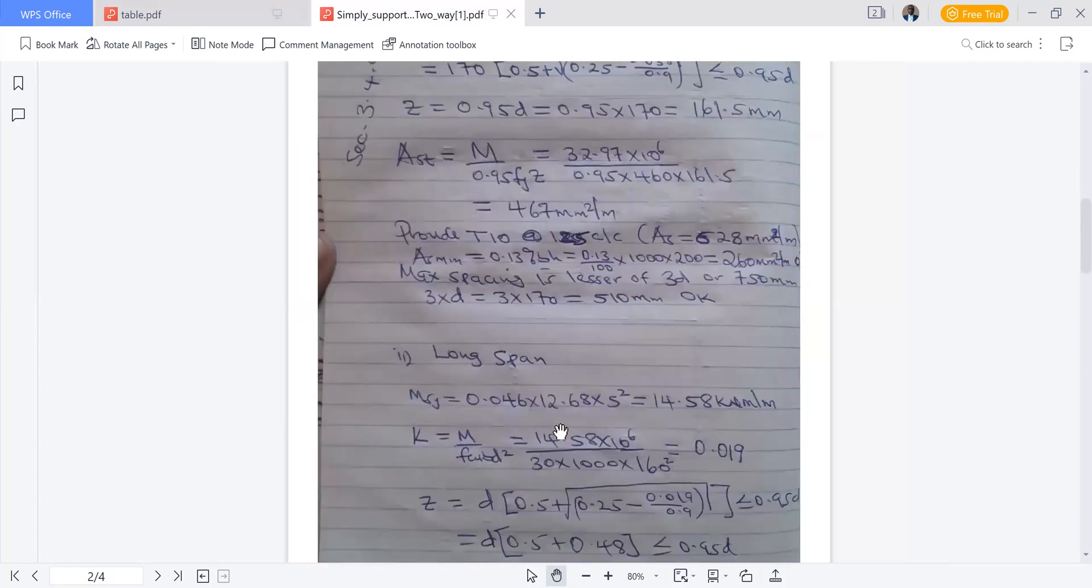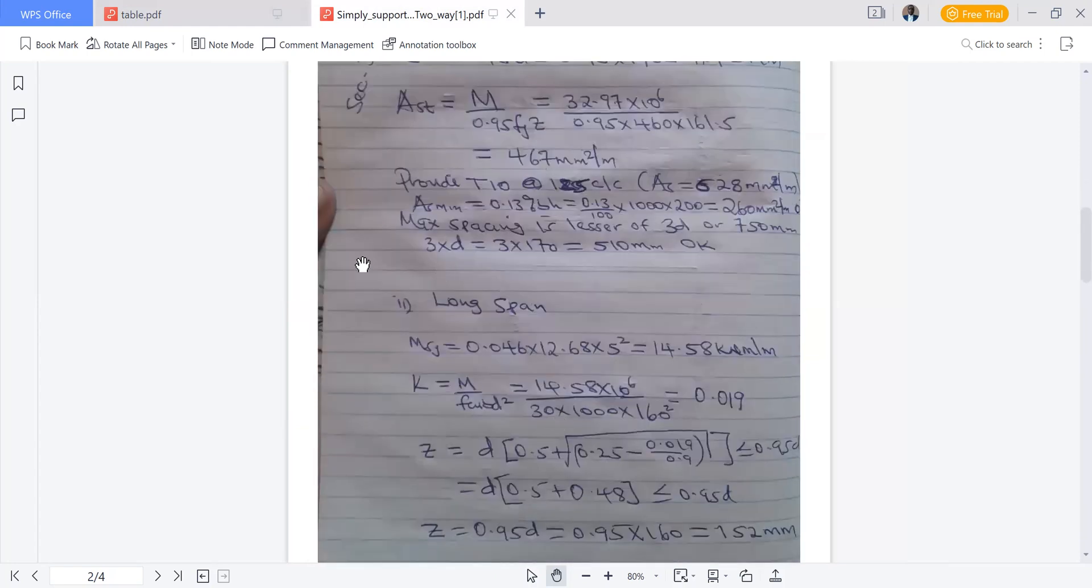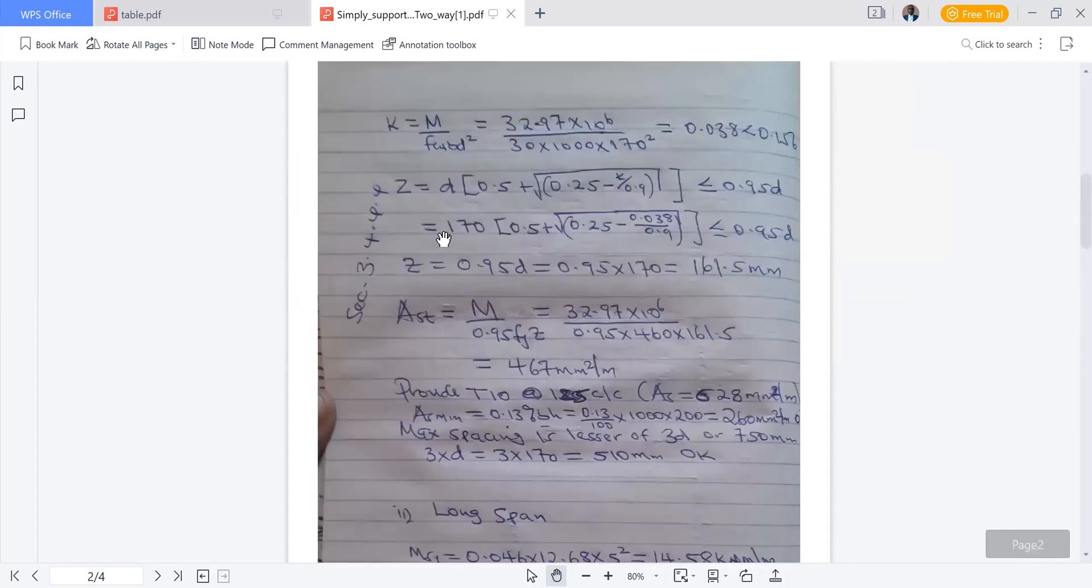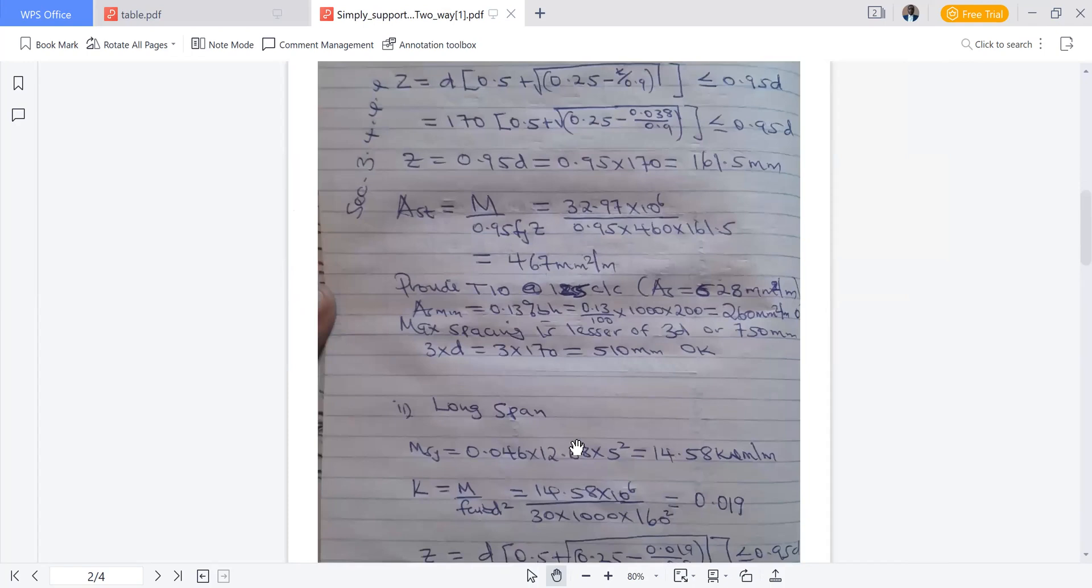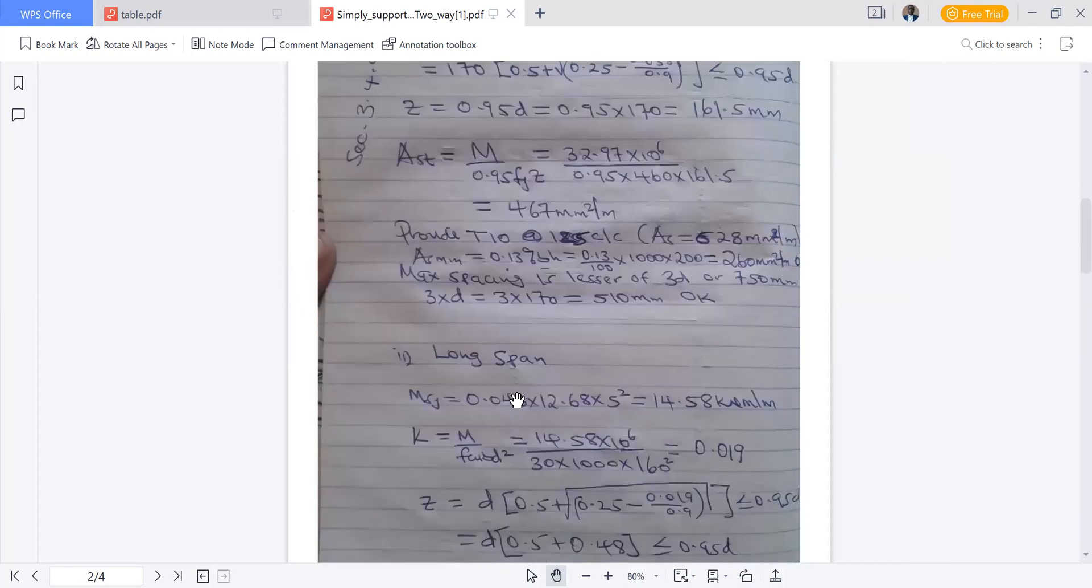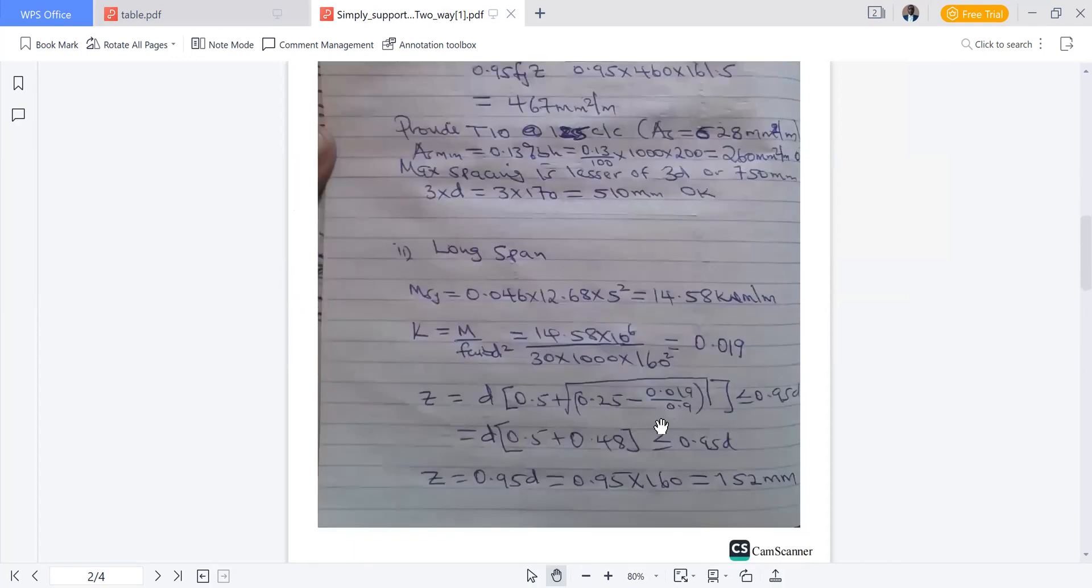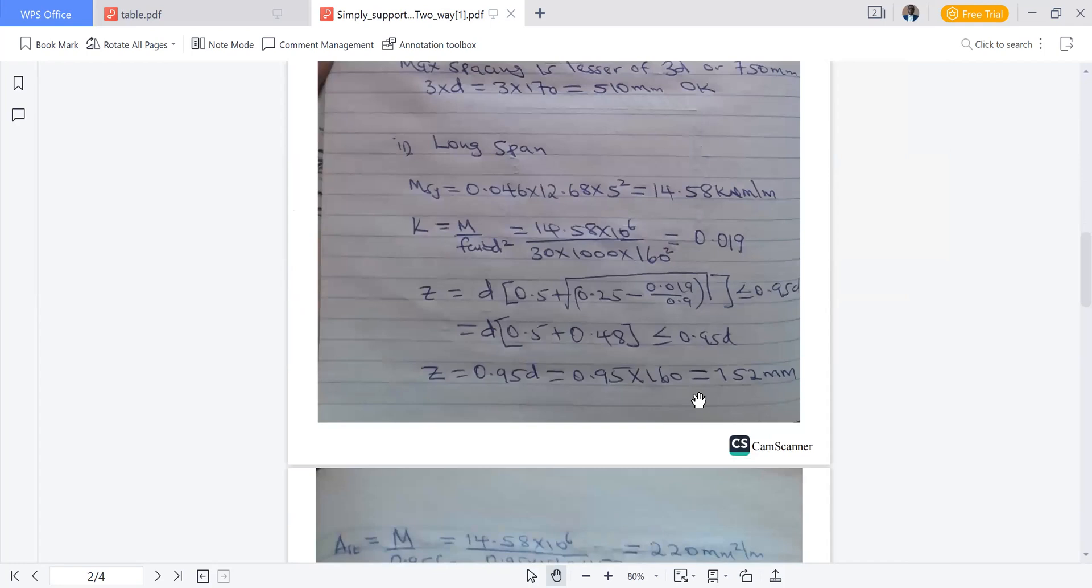Now we go to long span. Moment in the long span is given by the coefficient 0.046 multiplied by design load n times shorter span squared. We compute k which will be given by that. The difference here is the value of moment and d is 160. We compute z which will be restricted to 0.95d, we get 152 millimeter.